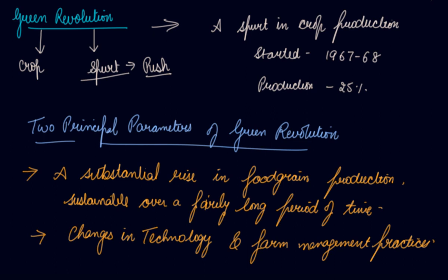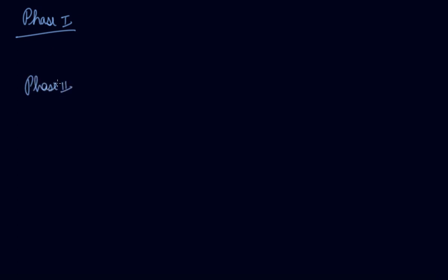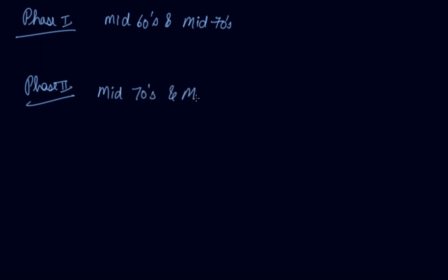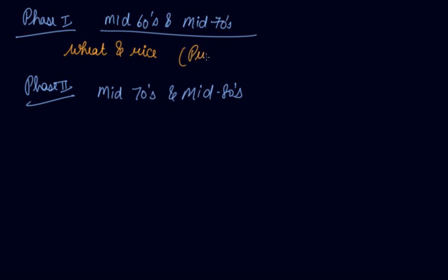The Green Revolution occurred in two phases. Phase one was from mid-1960s to mid-1970s, since the Green Revolution started in 1967. Phase two was from mid-1970s to mid-1980s. In Phase one, the Green Revolution was restricted to and mainly focused on wheat and rice crops in regions including Punjab, Haryana, and Tamil Nadu — limited states of India.